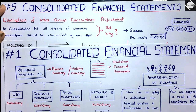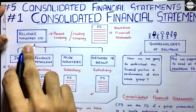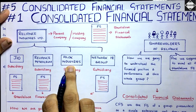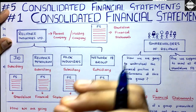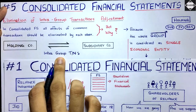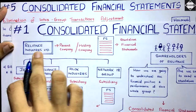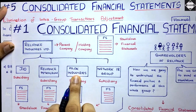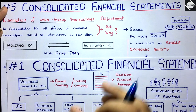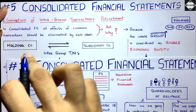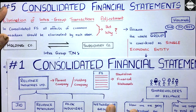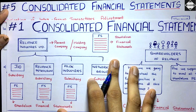Let's take an example. Let's say Reliance Industries sold something on credit to Alok Industries. This transaction would be classified as an intra-group transaction because Reliance Industries is the holding company and Alok Industries is its subsidiary. So this is a transaction within the group. Now what will happen to this transaction? Understand properly.